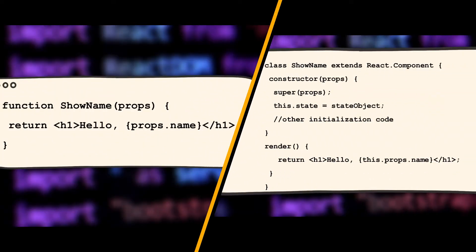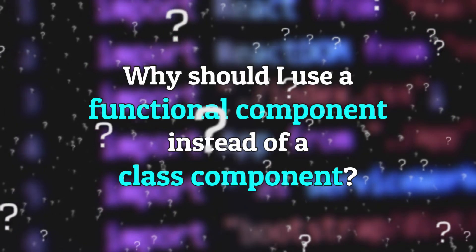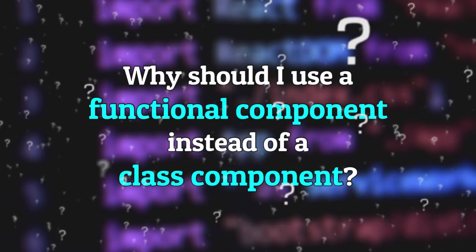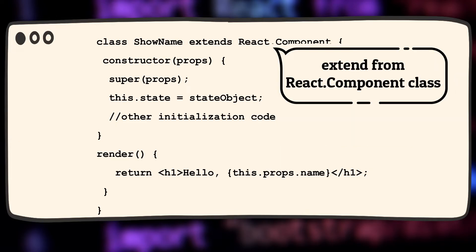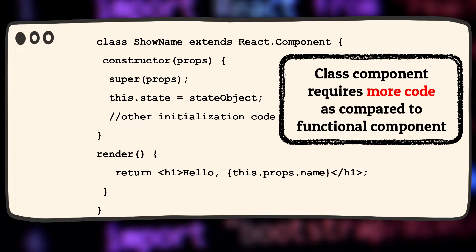Both versions are equivalent and will give you the exact same output. Now you'll ask me why should I use a functional component instead of a class component. Well, to start off, the main difference is the syntax, because a class component requires you to extend from the React.Component class and also create a render function which returns a React element. It requires more code as compared to a functional component.